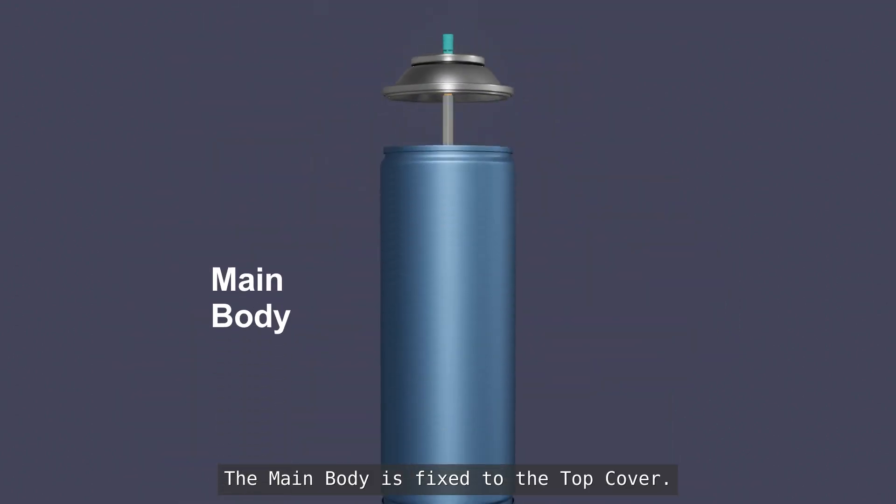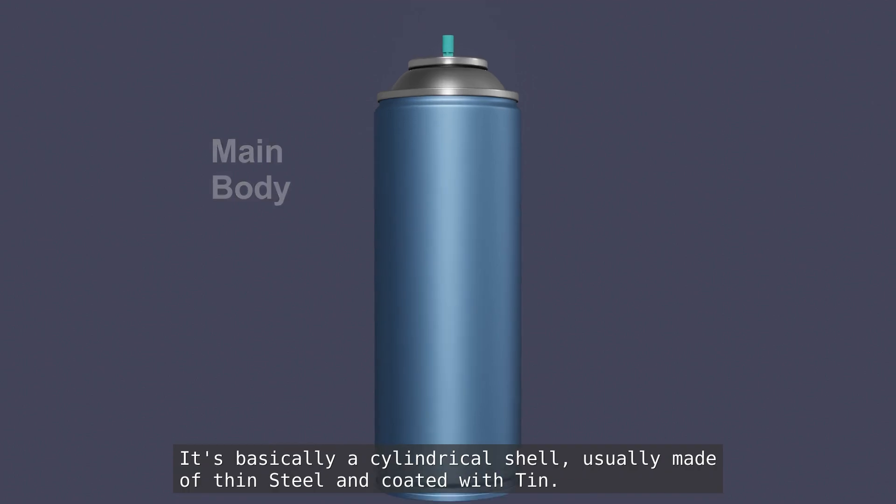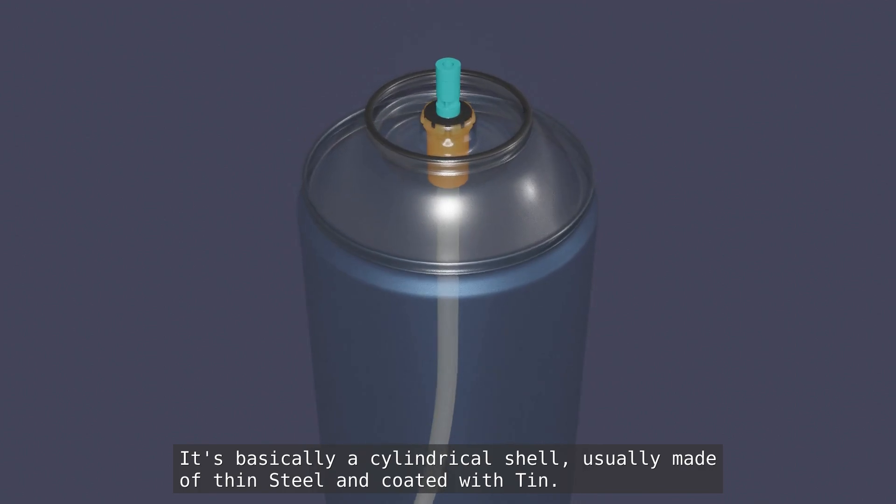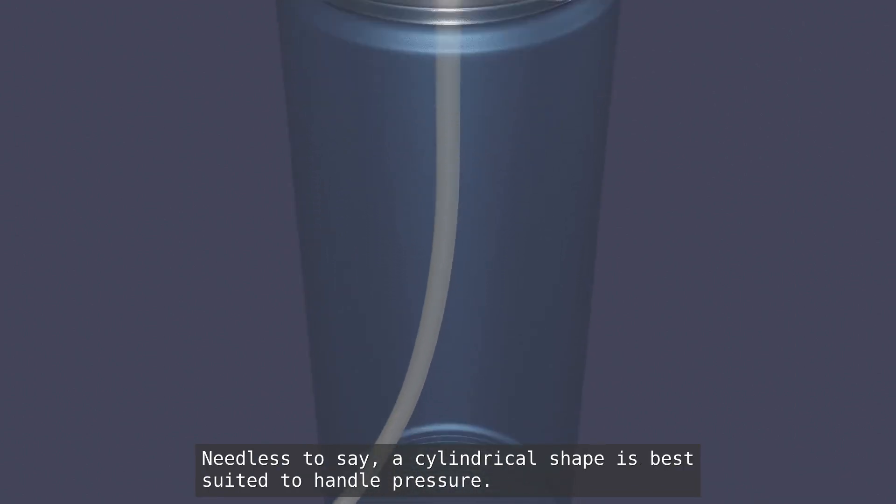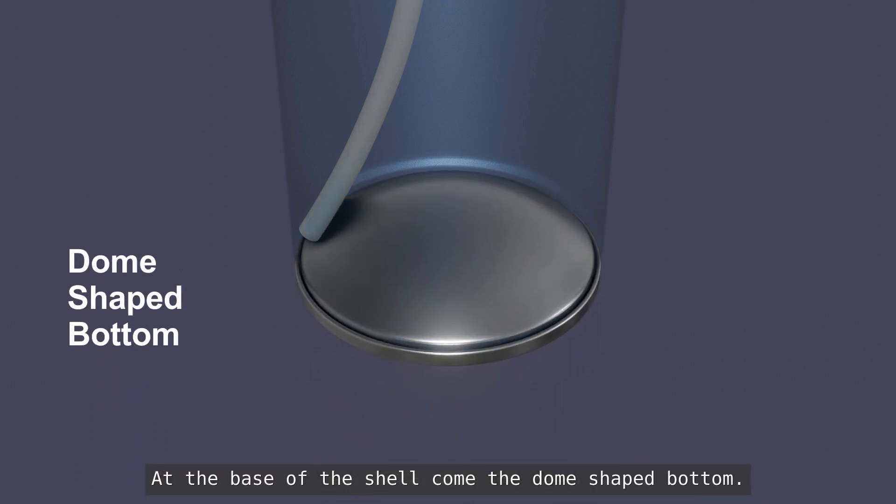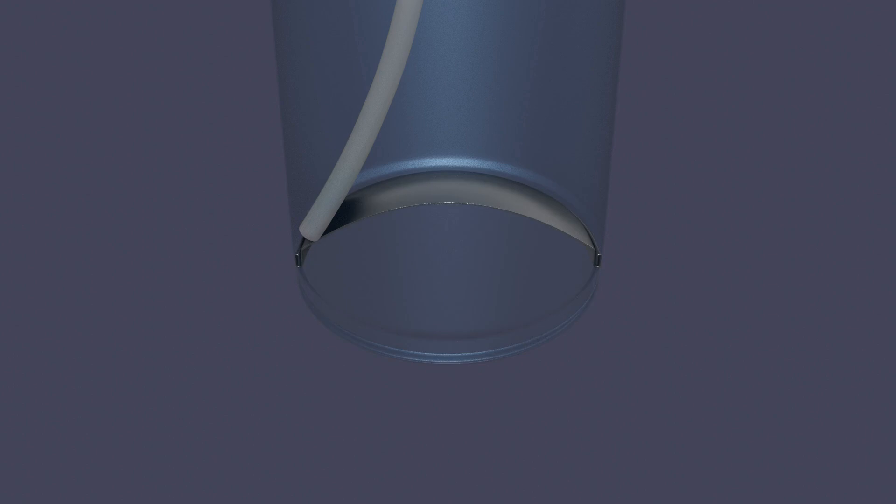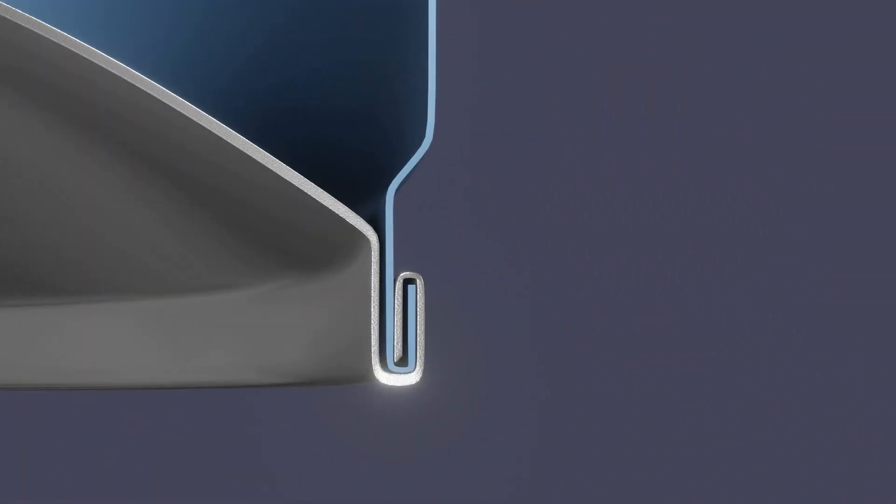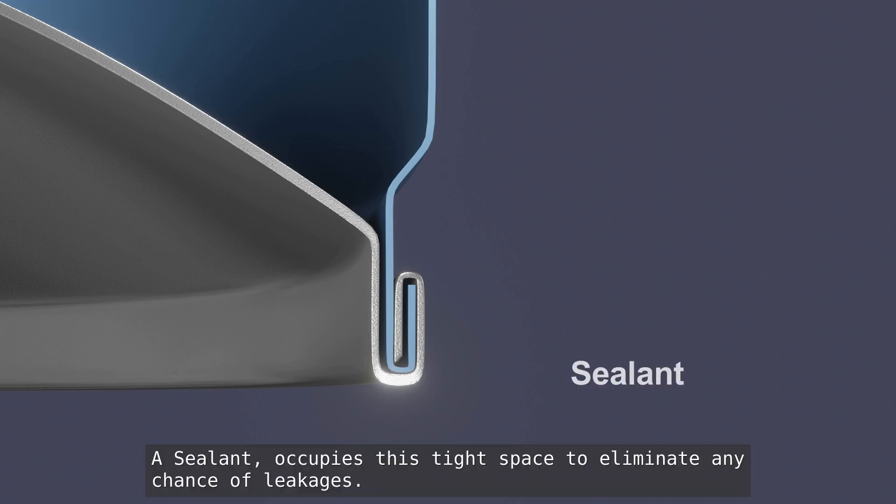The main body is fixed to the top cover. It's basically a cylindrical shell, usually made of thin steel and coated with tin. Needless to say, a cylindrical shape is best suited to handle pressure. At the base of the shell comes the dome shape bottom. We see how it's tightly connected to the shell. A sealant occupies this tight space to eliminate any chance of leakages.